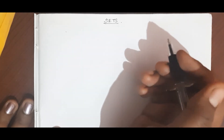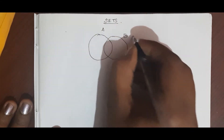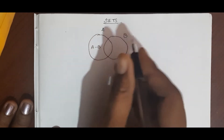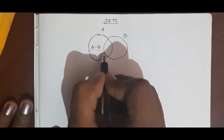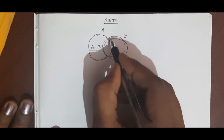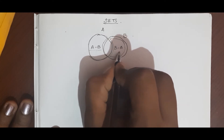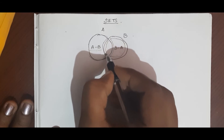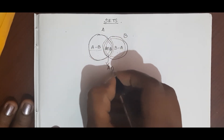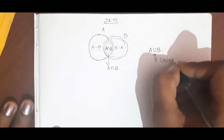Here are the important points in sets. We have set A and set B. The completely A part and the completely B part. A minus B is the part that does not contain any part from B, and B minus A is the part that does not contain any part from A — so we write B minus A, not A minus B. The part that has common elements from both A and B is written as A intersection B. The entire region together is the union part.